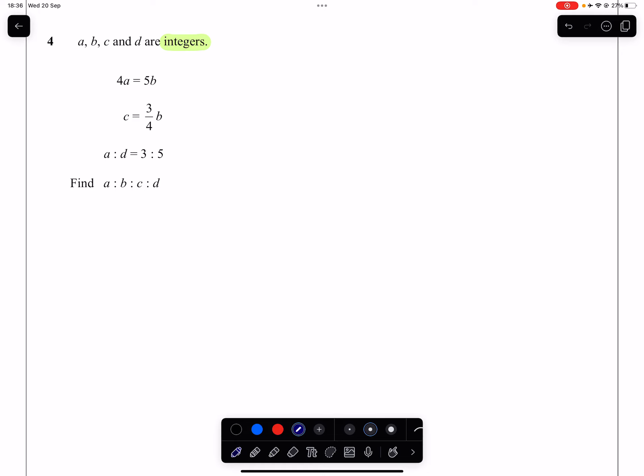And we're given two equations comparing A and B, comparing B and C, and we're given a ratio comparing A and D. We're being asked to find a ratio A to B to C to D.